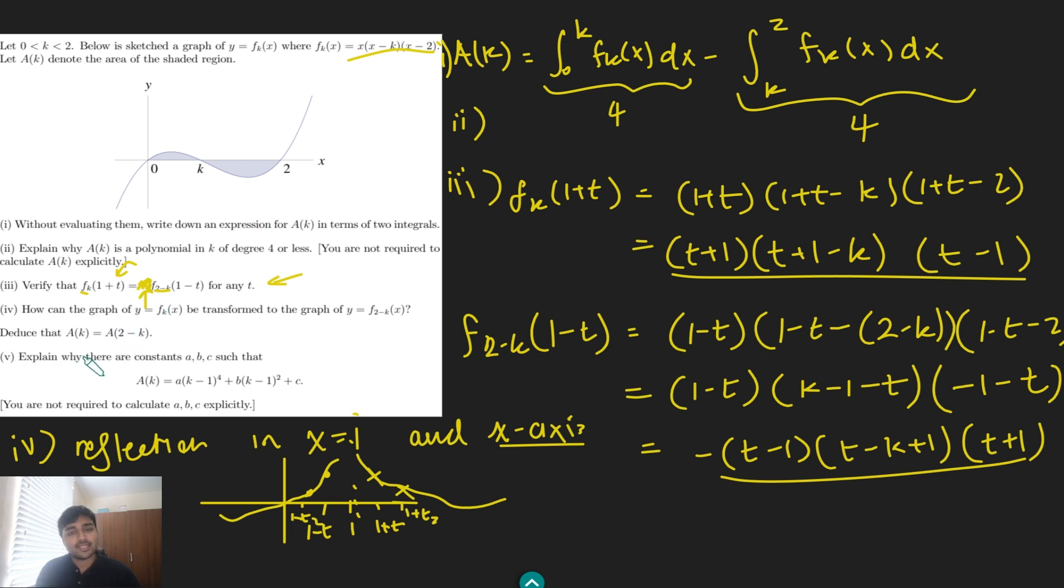And so therefore, this is just a reflection in the line x equals 1, and then the minus sign, which I've now scribbled out, gives you the reflection in the x-axis as well. So do pause the video to really digest that. Maybe whip out pen and paper and convince yourself that that's true, because that's really important and a really useful fact to be able to recognize on sight for future problems. And so the remaining part, part 4 says deduce that ak equals a(2-k). Well, why is this true? Well, basically, we've shown that fk and f(2-k), they are just, to get from one to the other, you just have to reflect twice. And obviously, reflections don't impact any areas. And so therefore, these two areas will be the same. So that's why we get ak equals a(2-k).